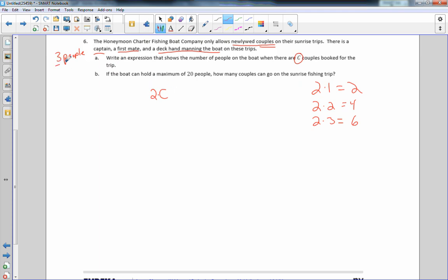We have to remember that there are three people that work on the boat: the captain, the first mate, and the deckhand. So when I do that, I want to add those three in because there's three people on the boat that work, plus the number of couples. So this is the expression for number of couples and the crew on this charter fishing boat.